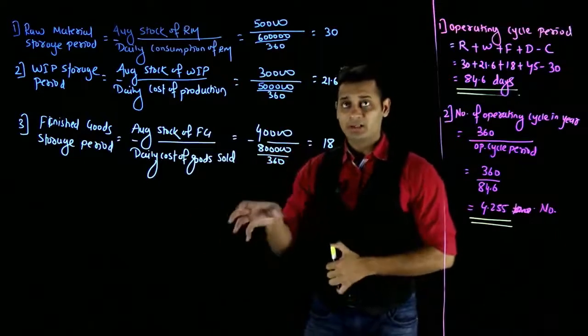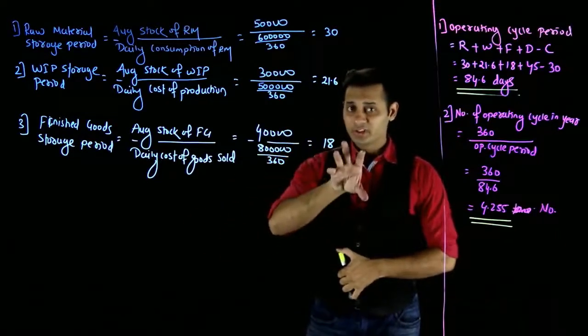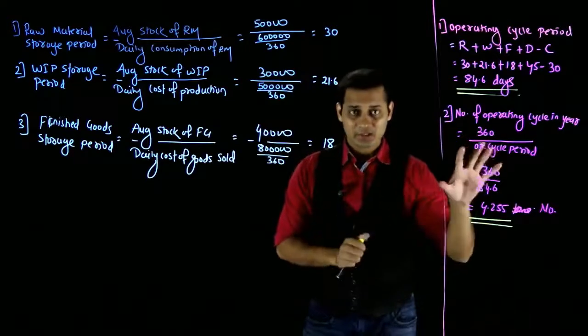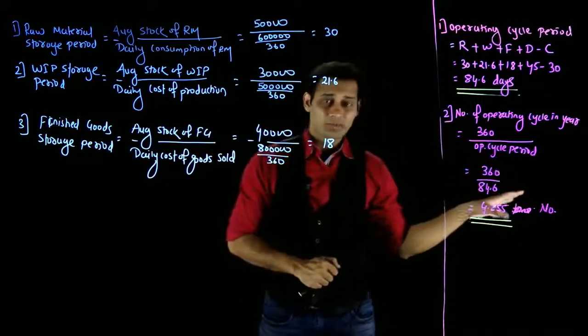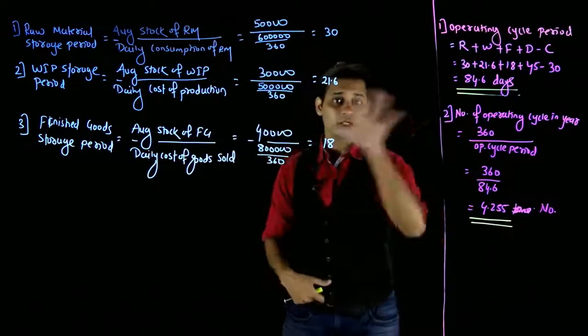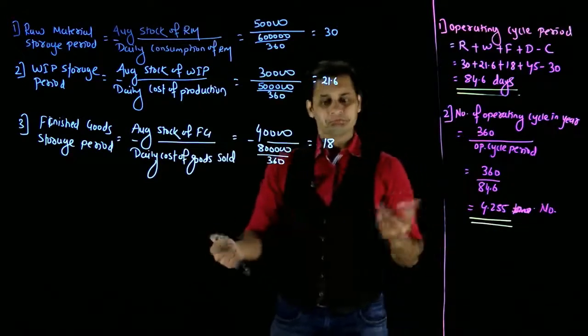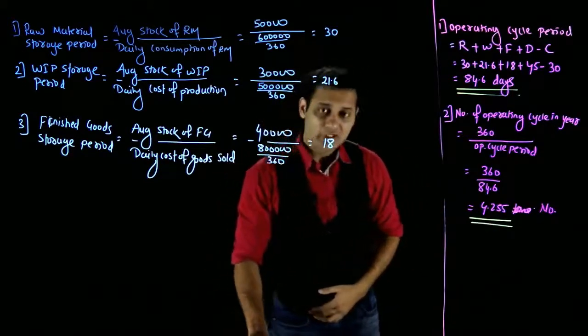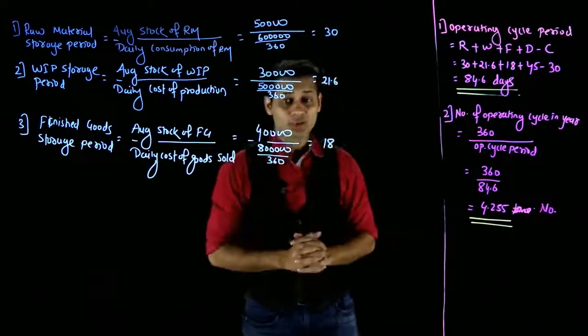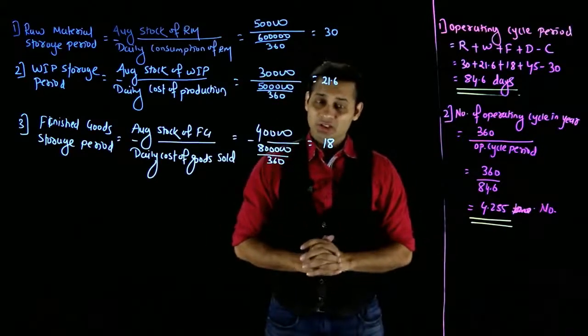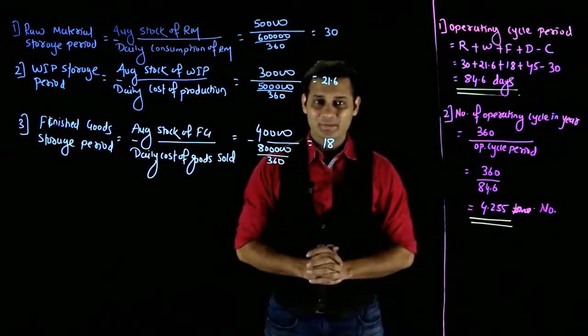When the goods come, they stay in the stores department 21.6 days, in the WIP 18 days, 45 days with the customer, 30 days credit. If you have any kind of doubt in this question, feel free to ask me. I will move on to the next lecture. We will see you in the next lecture. Bye bye.